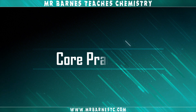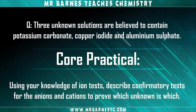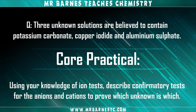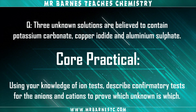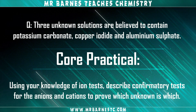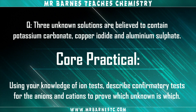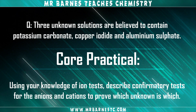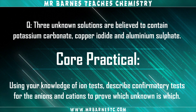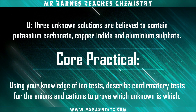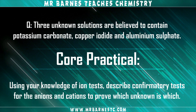So that's just a very brief recap. What we're going to do now is have a look at the type of things that could come up in the exam. I've got a question: three unknown solutions are believed to contain potassium carbonate, copper iodide, and aluminium sulphate. Using your knowledge of ion tests, describe the confirmatory tests for the anions and cations to prove which unknown is which. You need to know the anion and cation tests for potassium, carbonate, copper, iodide, aluminium, and sulphate.